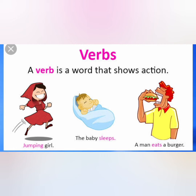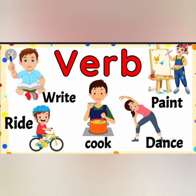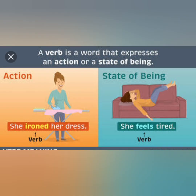Now let us go to verbs. A verb shows the action. 'The girl jumps.' 'The baby sleeps.' 'A man eats a burger.' Whatever action we do in our life, all comes under verbs. The reason I have taken this topic is because you have base form, past form, and past participle. All action words — write, cook, paint, dance, sleep — whatever it may be, all action words come under verbs.